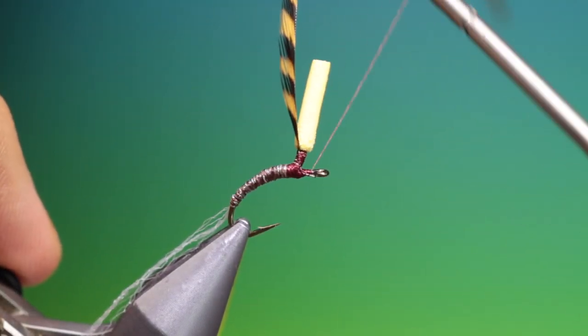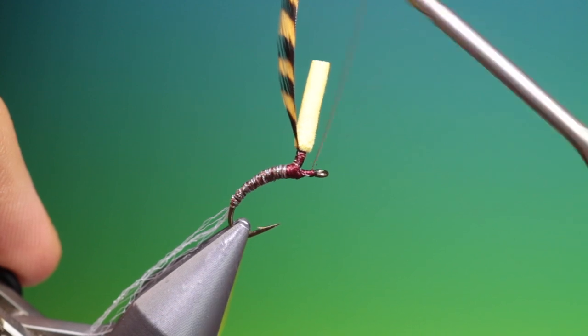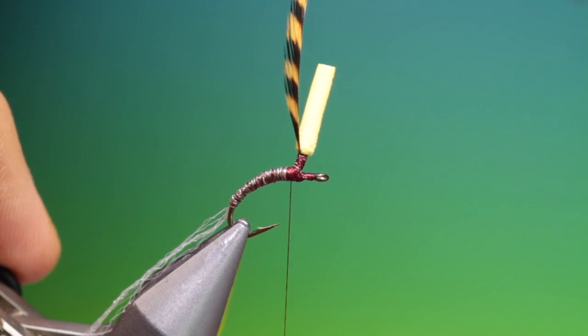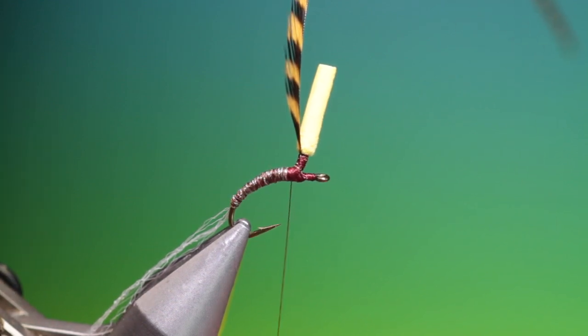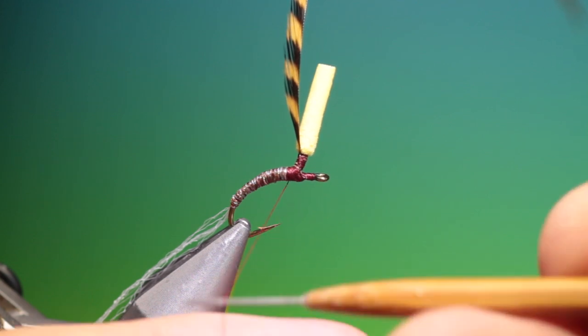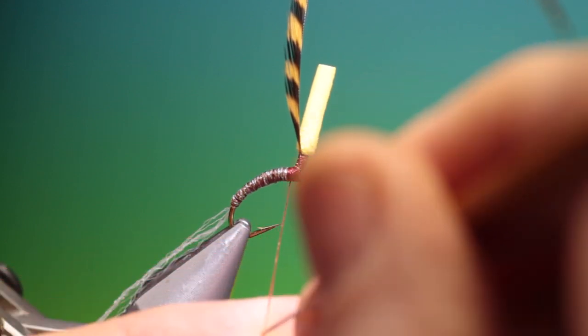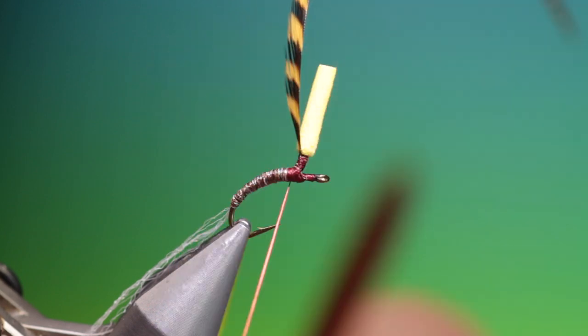We'll just tie that stub down and we'll go back to here. Spin my tying thread anti-clockwise. Split it. And just open up that loop.